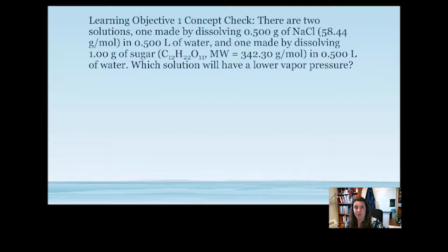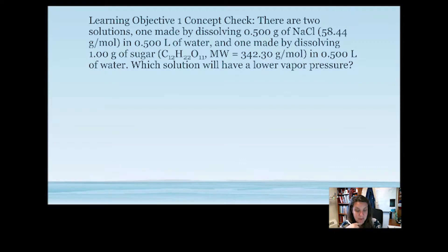Vapor pressure lowering is a colligative property based on the amount of particles. The greater the number of particles, the greater the vapor pressure lowering. Consider two solutions: one made with 0.5 grams of sodium chloride in 0.5 liters of water, and one made with 1 gram of sugar in 0.5 liters of water. Which solution will have the lower vapor pressure?